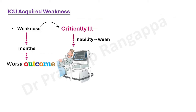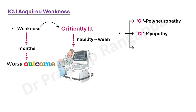When we talk about ICU-acquired weakness — and this can definitely be asked in exams — you have to divide it into three major categories. One is critical illness polyneuropathy where only the peripheral nerves are affected. Seldom we see only isolated polyneuropathy, or critical illness myopathy where only muscles are involved. But most often we see a combination of these two — a complex interplay of neuropathy and myopathy, which we call critical illness myoneuropathy.